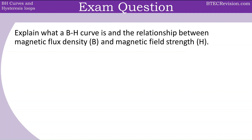Explain what a BH curve is and the relationship between the magnetic flux density and the magnetic field strength. A BH curve is a graphical representation of how the magnetic flux density in a material responds to changes in the magnetic field strength. It illustrates the material's magnetization characteristics. The curve shows the relationship between B and H, showing how the flux density changes as the magnetic field strength varies. This graphical representation helps in understanding the magnetic behavior of materials, particularly in terms of saturation, coercivity, and hysteresis.